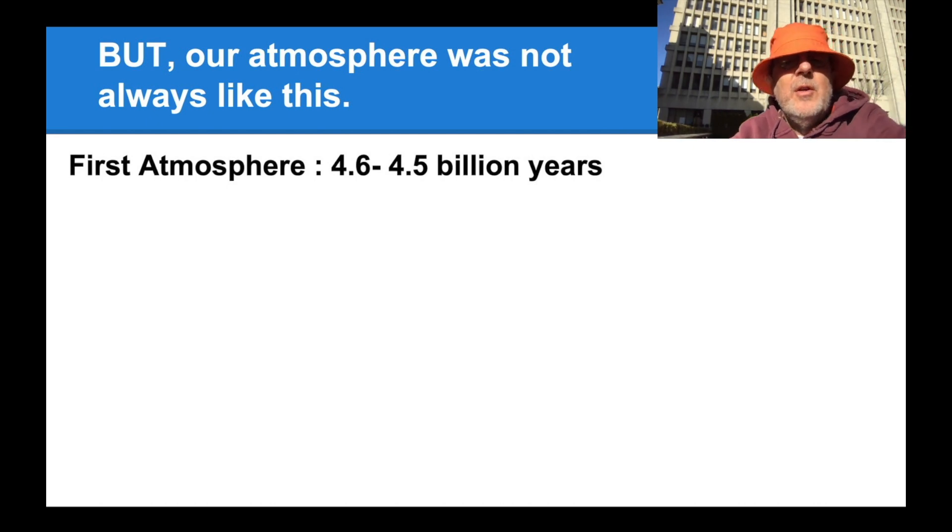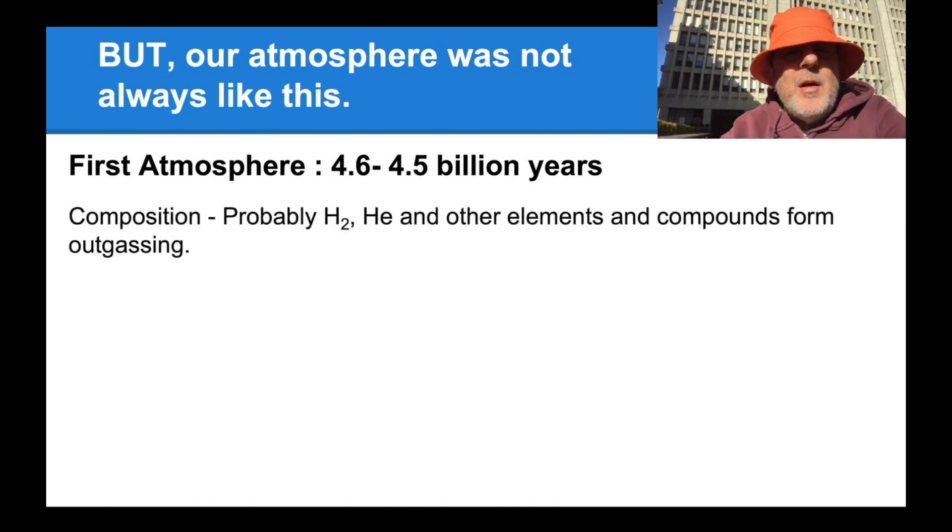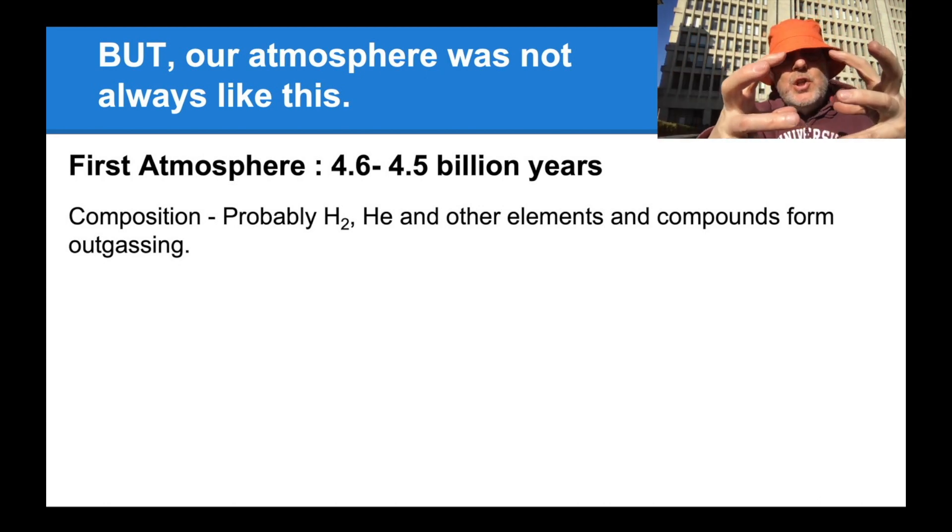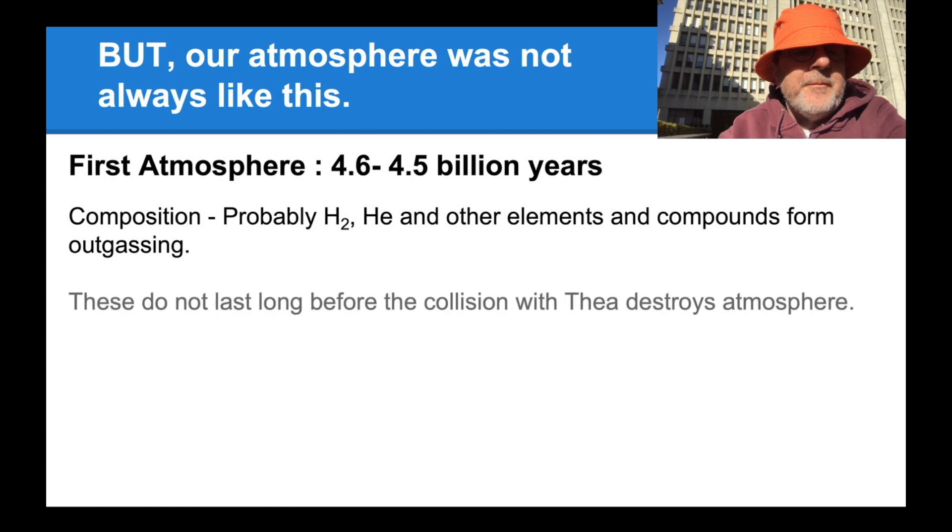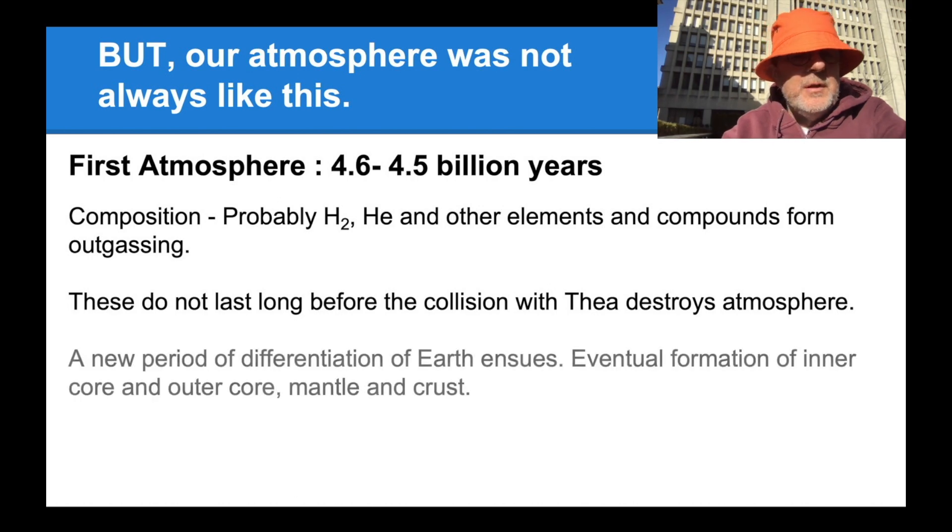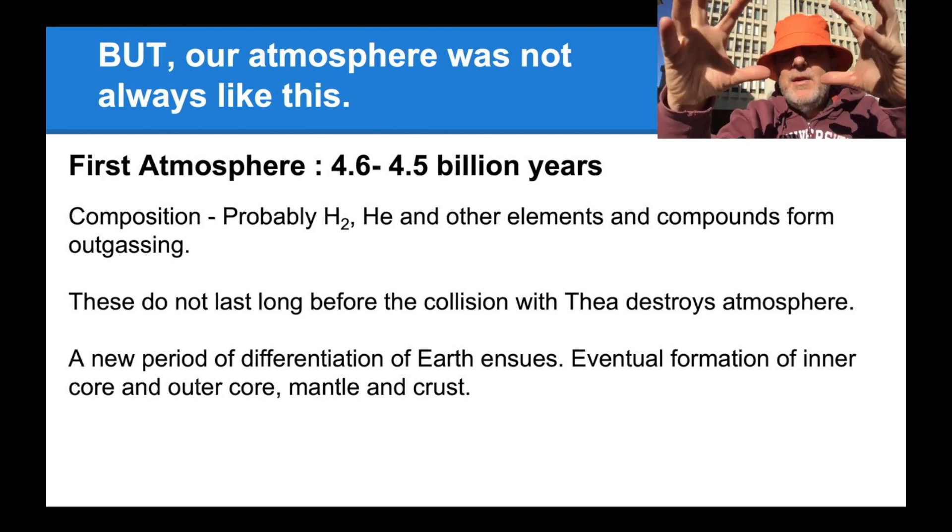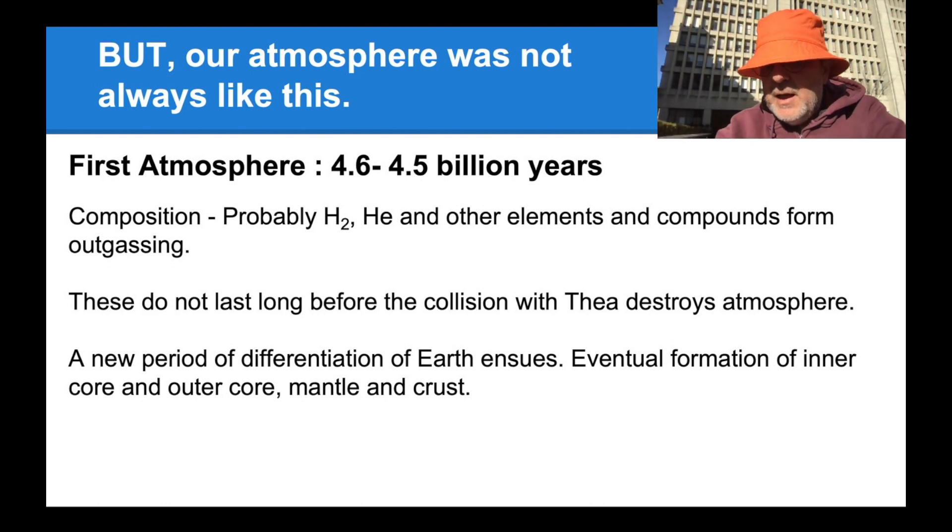The first atmosphere we considered to have existed from 4.6 to 4.5 billion years ago. Its composition was probably hydrogen gas, helium, and other elements and compounds that are outgassing from the accretion of material that's forming the Earth in the early solar system. These do not last long before the collision, or this does not last long, this atmosphere, before the collision with Theia destroys essentially the Earth that had first formed. A new period of differentiation of the Earth then progresses with the formation of the Moon and the eventual formation of an inner core, outer core, mantle, and crust.